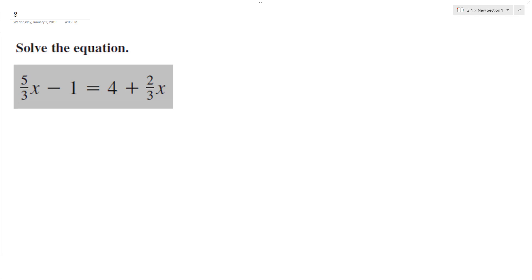We want to solve the following problem. First thing we need to do is get the x's on one side and the constants on the other. So I'm going to have 5/3 x minus 2/3 x, and then I'm going to have 4 plus 1.